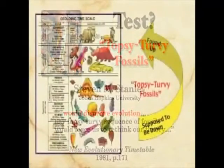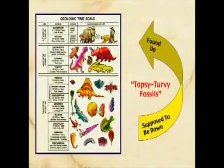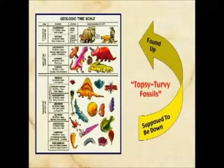Any topsy-turvy sequence of fossils would force us to rethink our theory. So if you're finding things that are supposed to be on the bottom up at the top, then you've got a problem. The problem for the evolutionist is we find that kind of thing all the time — that's really not that unusual. They're called living fossils.